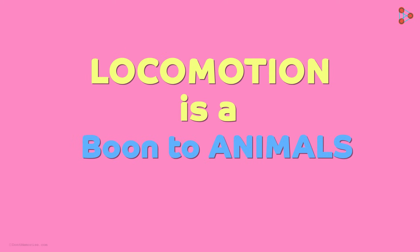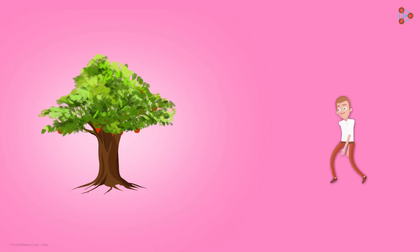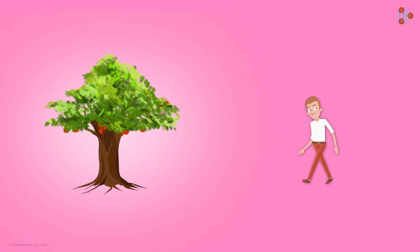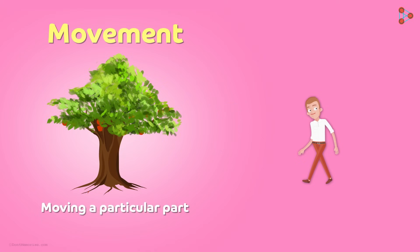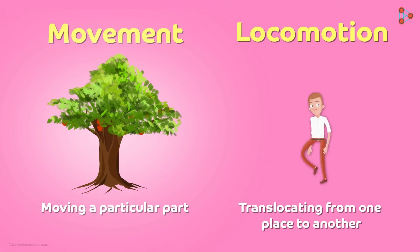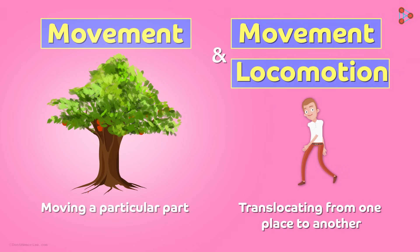Locomotion is a boon to animals. We find plants moving and animals moving as well as locomoting. So what's the basic difference between the two? Movement is basically just moving a particular part, while locomotion is translocating from one place to another. Hence we say that plants only move, while animals can carry out both movement as well as locomotion.